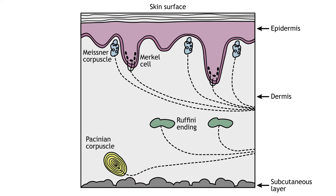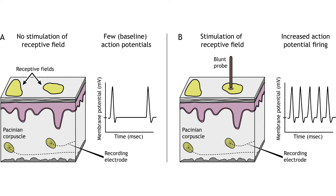We can feel different modalities of touch because of specialized sensory receptors called mechanoreceptors located in the skin. The Pacinian corpuscles are located deep in the dermis and are responsible for perception of vibration. Ruffini endings detect skin stretch and are also located within the dermis. Meissner corpuscles are stimulated by skin motion and are located in the epidermis. Merkel cells are located at the border between the dermis and epidermis and are specialized to detect edges and points.